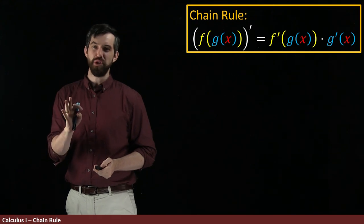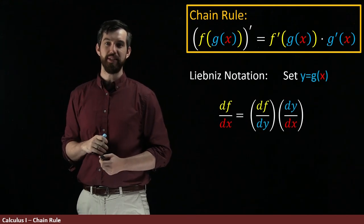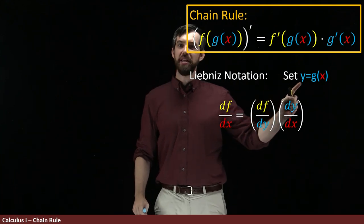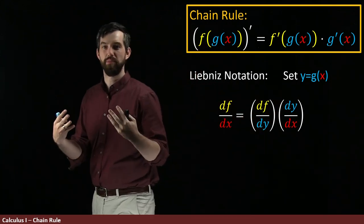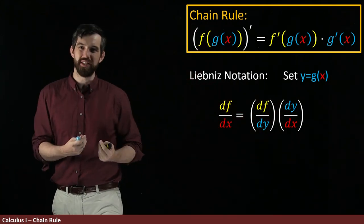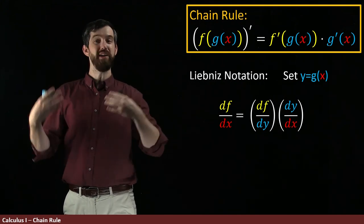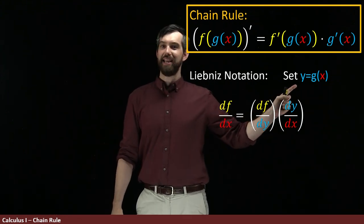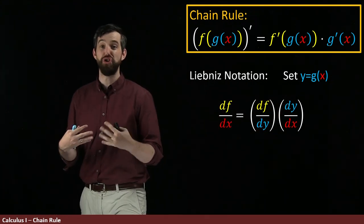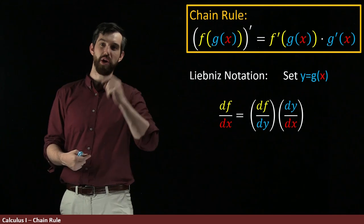So first what I'm going to do in Leibniz notation is I'm going to specify an intermediate variable y. Remember our goal with the chain rule was the derivative of a composition. You had an inside function and an outside function. So we're going to give that inside function, the g of x, a variable name. We're going to call it y.